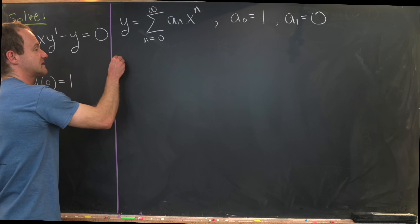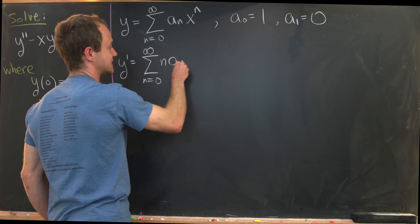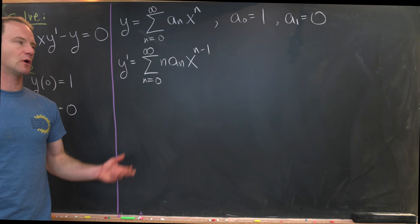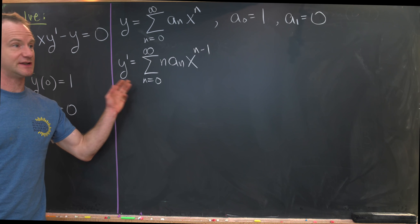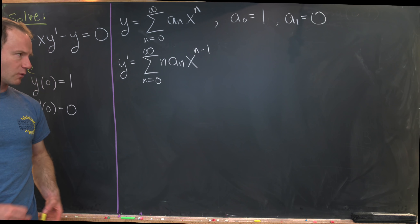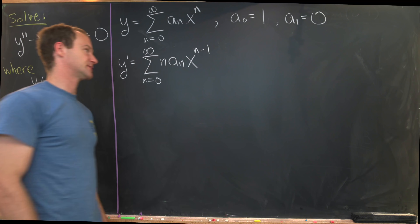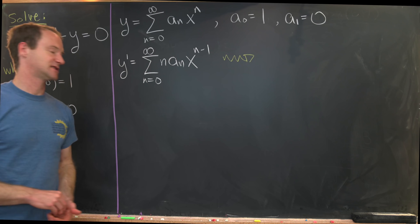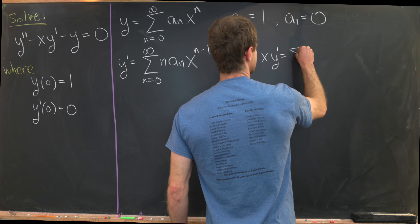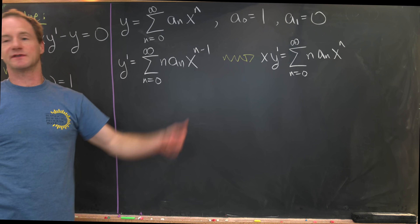If y is equal to this series, then y prime will be equal to the sum as n goes from zero up to infinity of n times aₙ times x to the n minus one — that's just term-by-term differentiation. Note that y prime does not freely live inside the differential equation; it's attached to a multiplier of x. So let's calculate x times y prime, which equals the sum from zero to infinity of n aₙ x to the n, since multiplying by x boosts all powers up one.